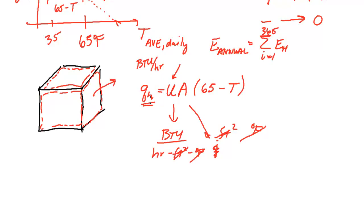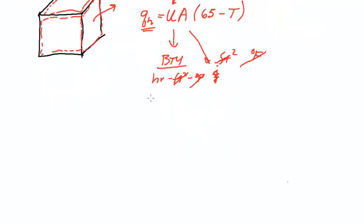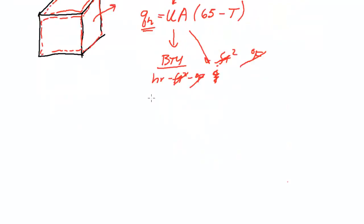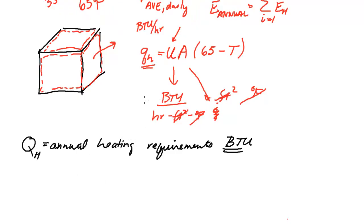Now, with that said, that's heat loss at any moment. Hopefully you can see where we're going with this. What we want, really, is capital Q. We want annual heating requirements. And that's going to be in BTUs.